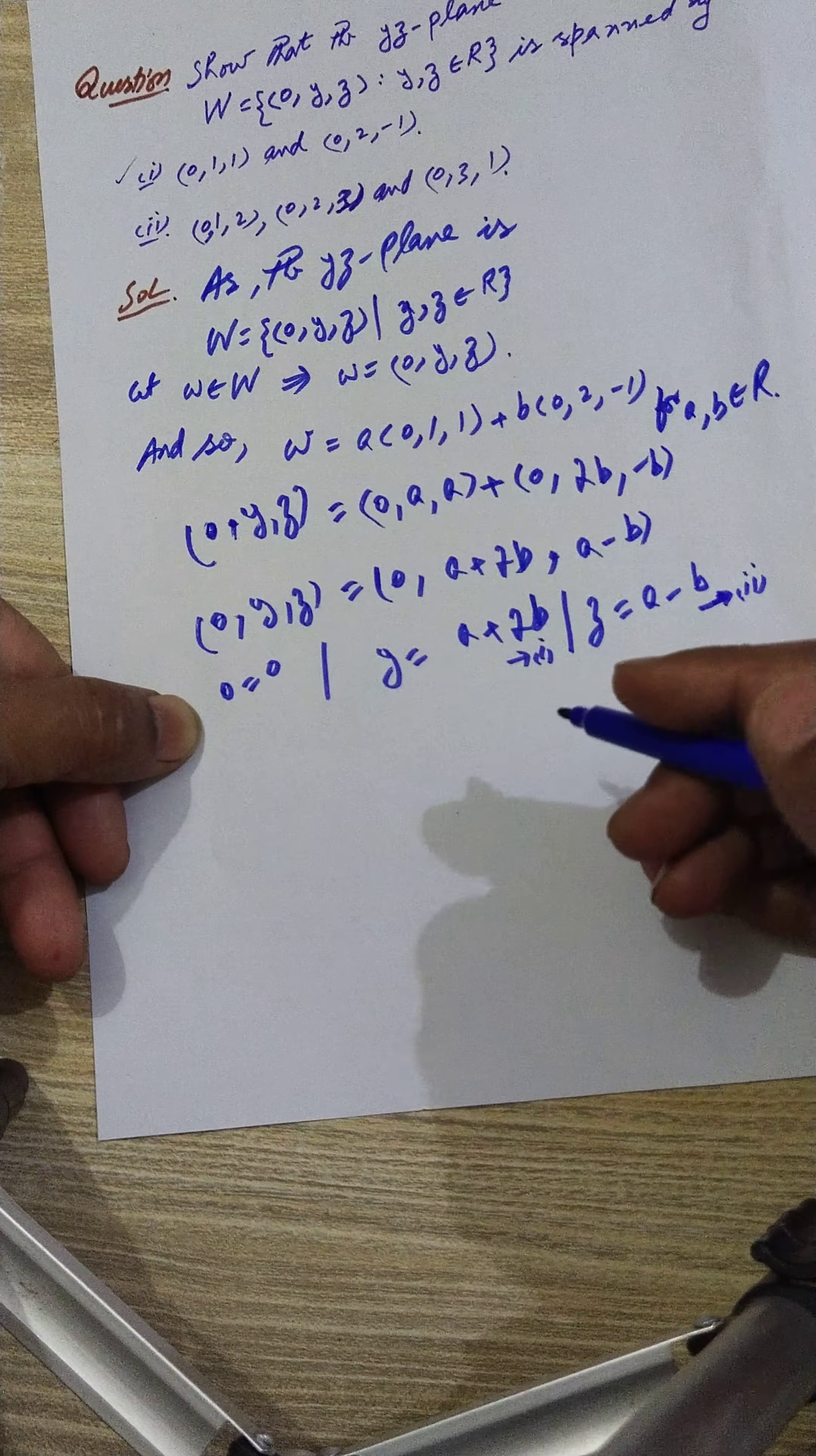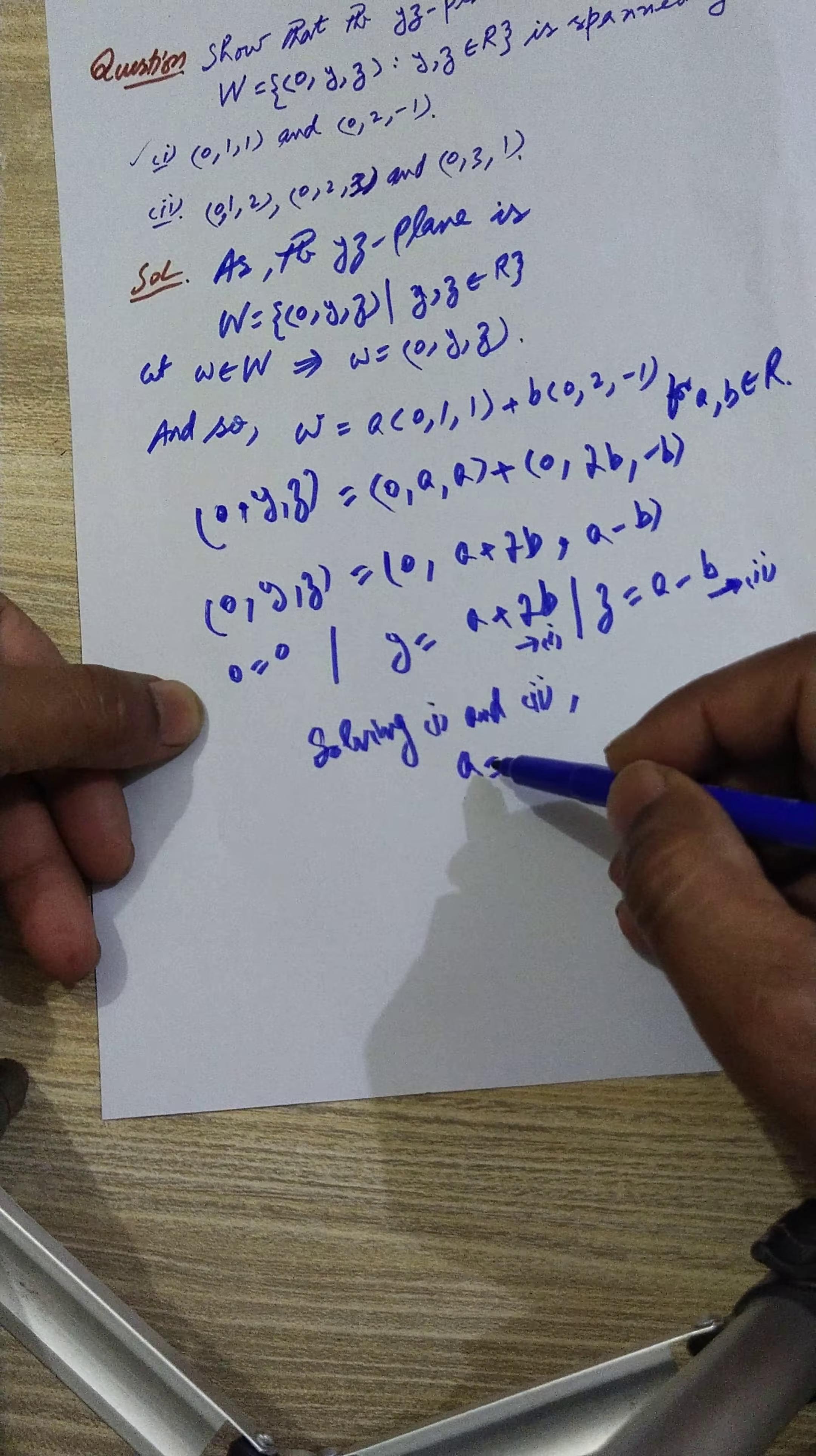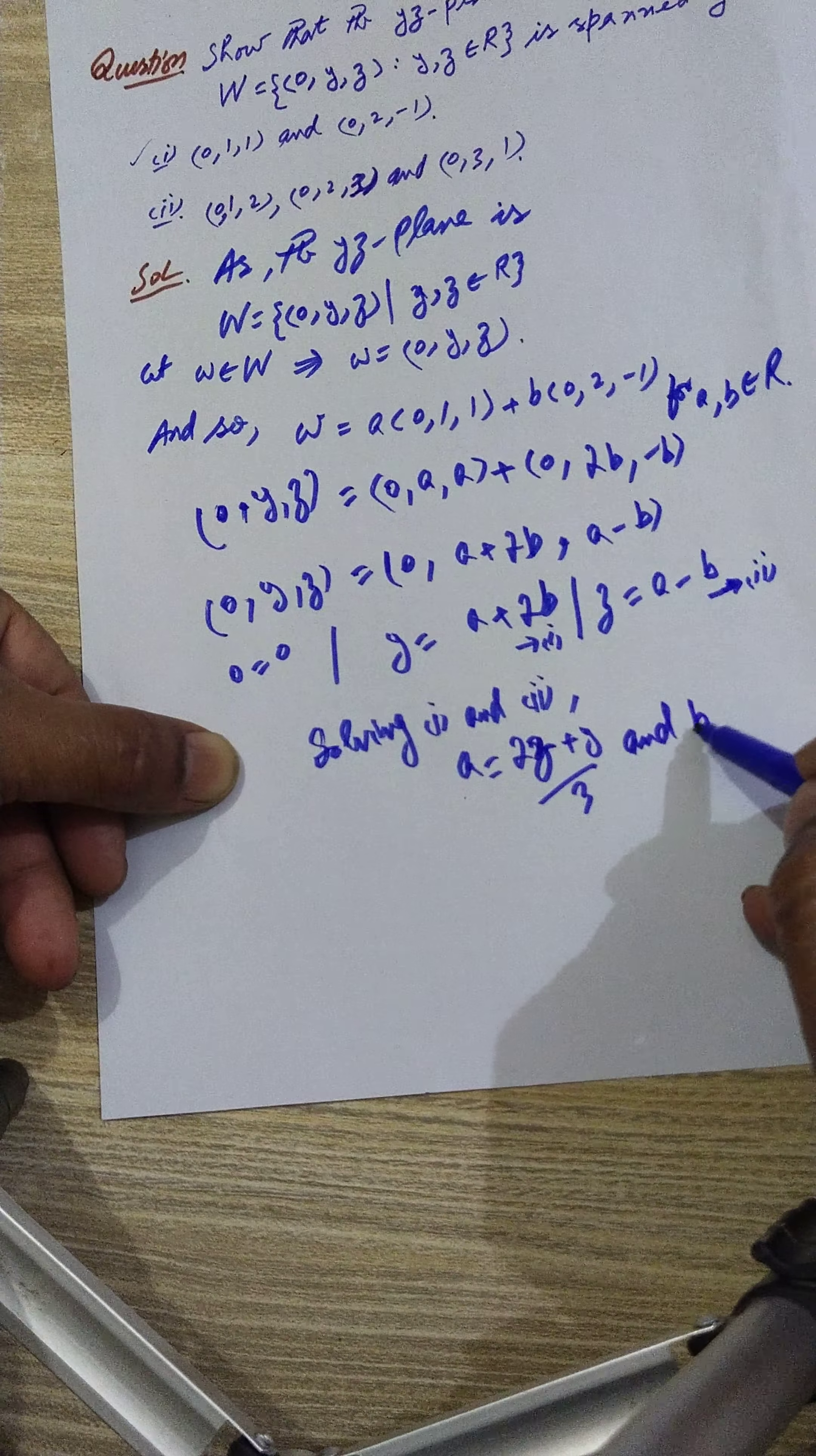So if we solve one and two simultaneously, that is solving one and two, when we solve them, what we get is...